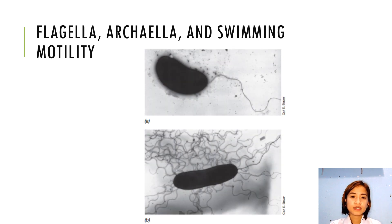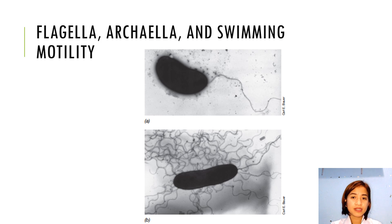As seen in the picture, A shows a single polar flagellum and B shows a peritrichous flagella arrangement. Flagella can be anchored to a cell in different locations. In polar flagellation, the flagella are attached at one end or both ends of a cell. Occasionally, a group of flagella may arise at one end of the cell — a type of polar flagellation called lophotrichous. Tufts of flagella can sometimes be seen in large stained cells by dark field or phase contrast microscopy. When tufts of flagella emerge from both poles of the cell, flagellation is called amphitrichous. In peritrichous flagellation, flagella are inserted around the cell's surface.